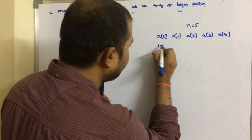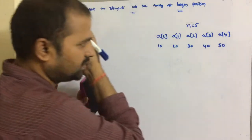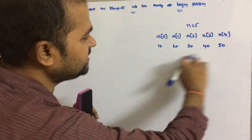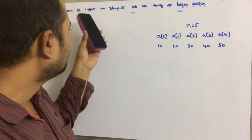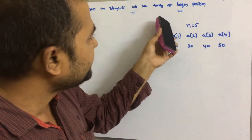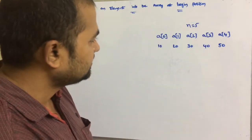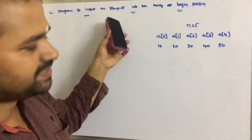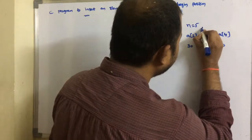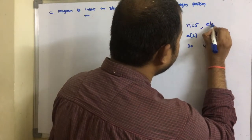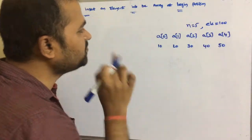Let the elements of the array be 10, 20, 30, 40, and 50. Our aim is to insert an element at the beginning position, so we require another input variable called 'element'. Let the element to insert be 100. We have to insert 100 at the beginning position.